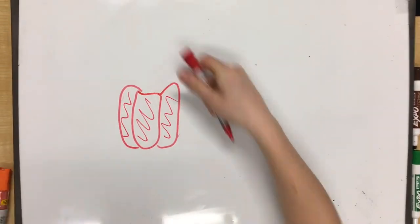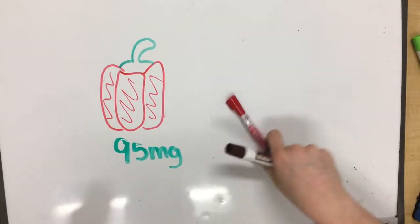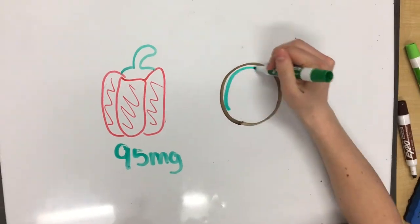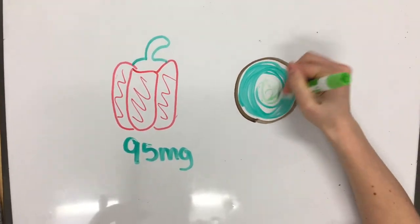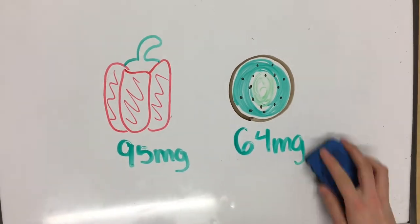Eating half a red pepper alone has 85 milligrams of vitamin C, and one little kiwi has 64 milligrams. Just a few of these fresh foods a day and you are easily able to combat the possibility of scurvy.